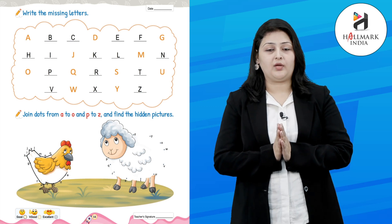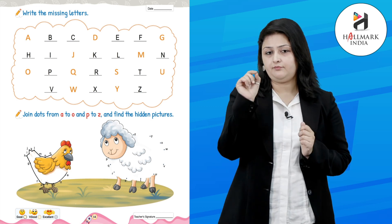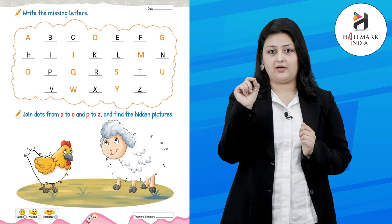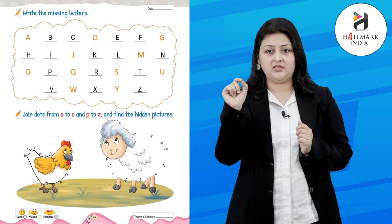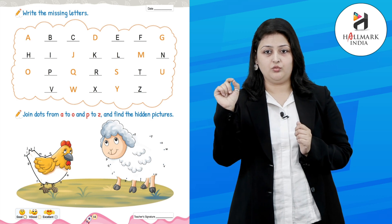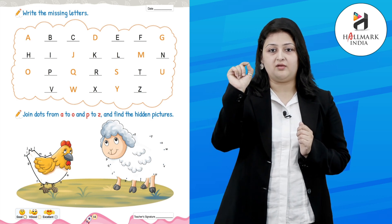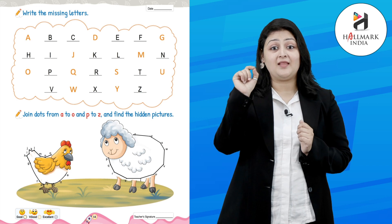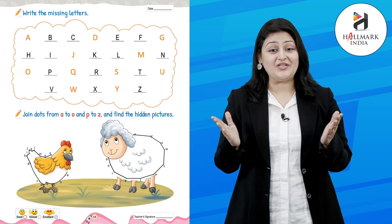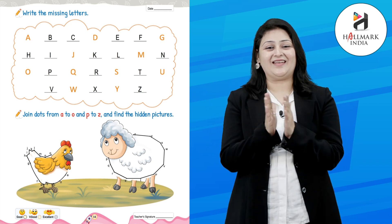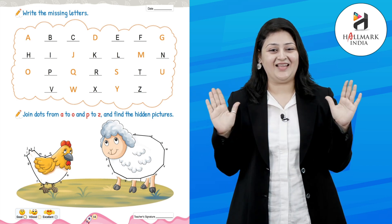Let's start with the next picture, P to Z: P, Q, R, S, T, U, V, W, X, Y, Z. That makes a shape — great! It was fun.